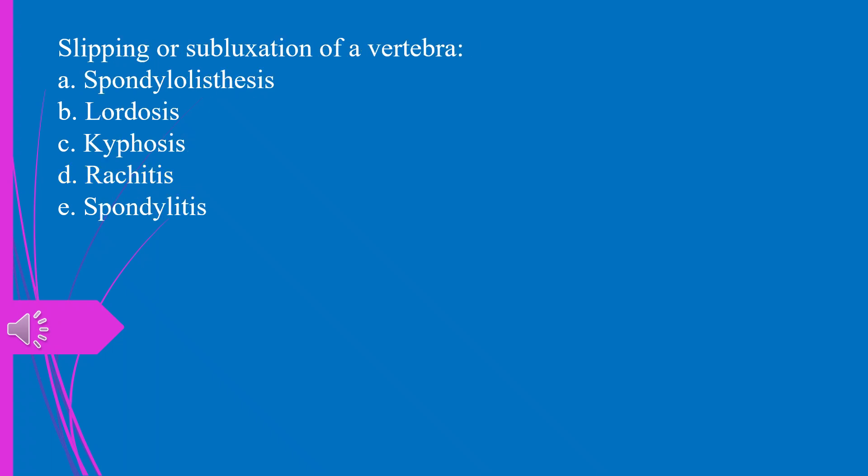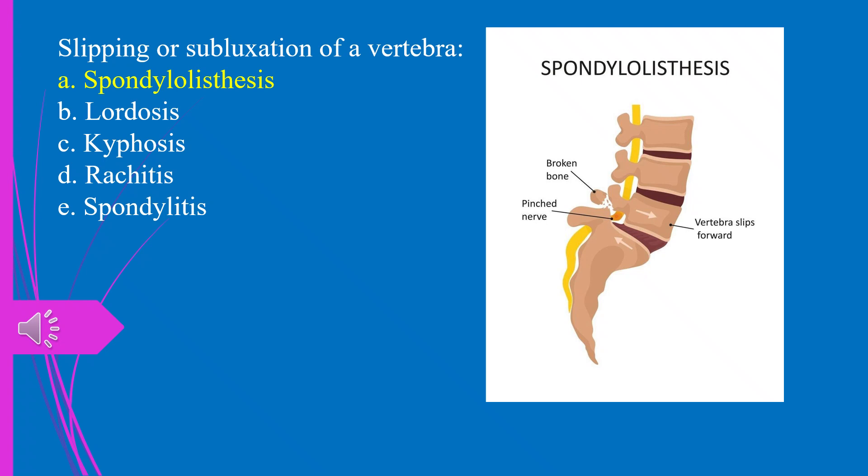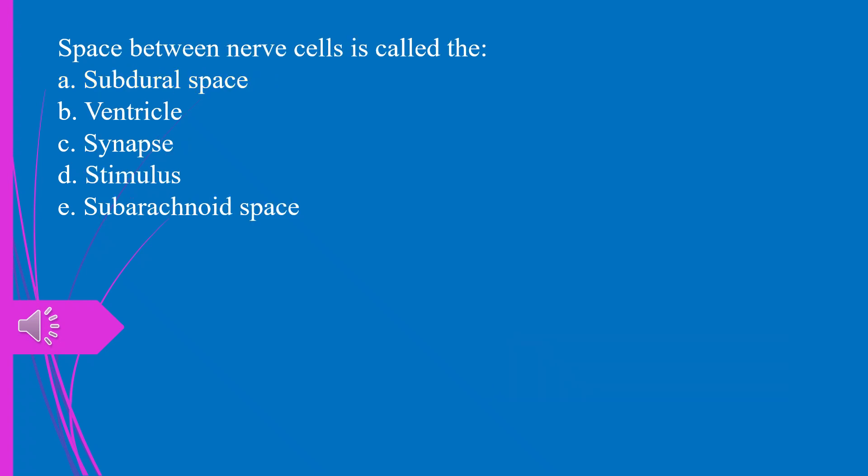Question 30. Slipping or subluxation of a vertebra: a) spondylolisthesis, b) lordosis, c) kyphosis, d) rachitis, e) spondylitis. The answer is a, spondylolisthesis.